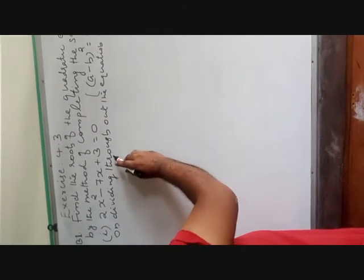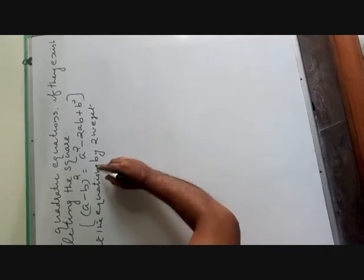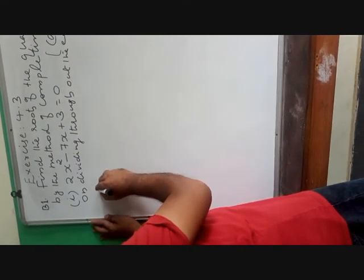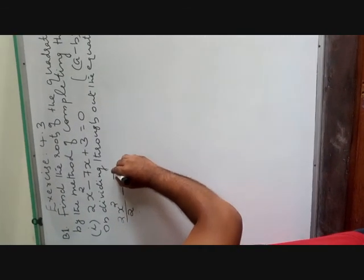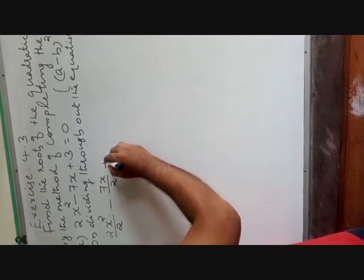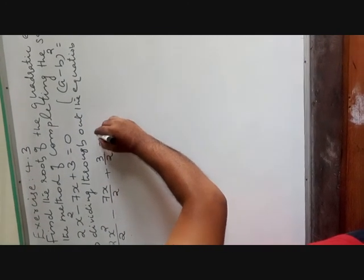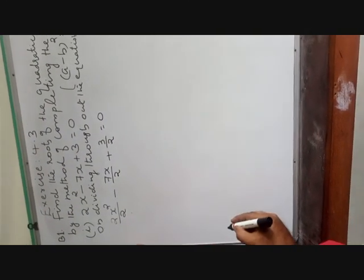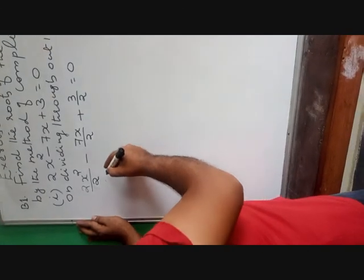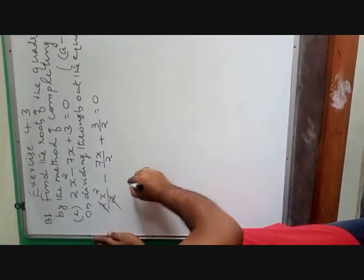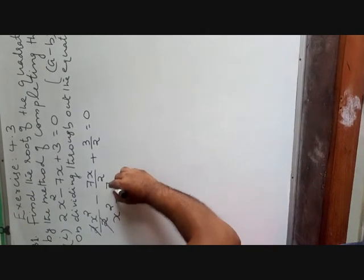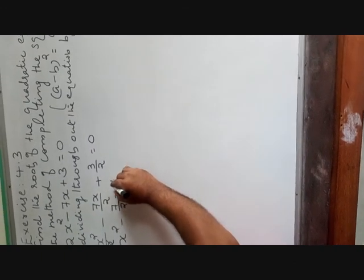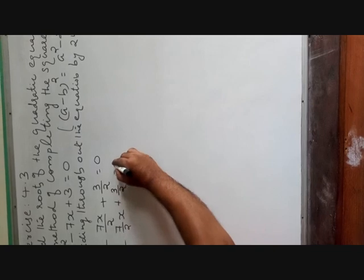On dividing throughout the equation by 2, we get: 2x squared by 2 minus 7x by 2 plus 3 by 2 is equal to 0. We can write this as x squared minus 7 by 2 times x plus 3 by 2 is equal to 0.